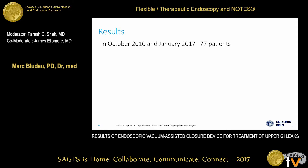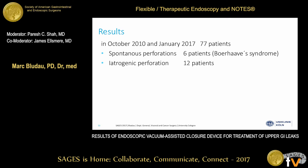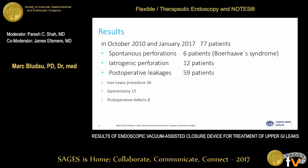Coming to our results: from October 2010 until January this year, we treated 77 patients. Six patients had spontaneous perforation with Boerhaave syndrome, 12 patients had iatrogenic perforations, and 59 patients had postoperative leakage — the largest group. Of those, 36 were after Ivor Lewis procedure; in that time period we performed 1,070 Ivor Lewis procedures in total. Fifteen patients had gastrectomy and 8 had other postoperative defects.